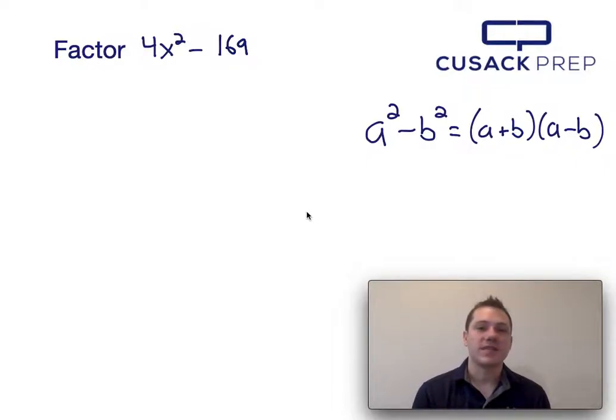Now as I go to factor this, I first notice that 4x squared and 169 are both perfect squares. Since they're both perfect squares, these can be factored using the difference of squares equation, which I presented here on the right hand side.